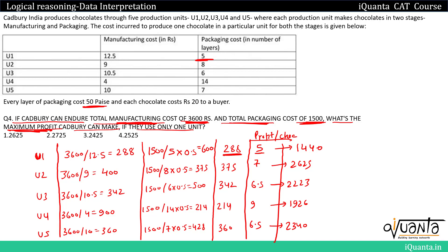The maximum profit is in U2 with Rs.2625. So we should invest the Rs.3600 manufacturing budget and Rs.1500 packaging budget into U2, which gives us the maximum profit of Rs.2625.